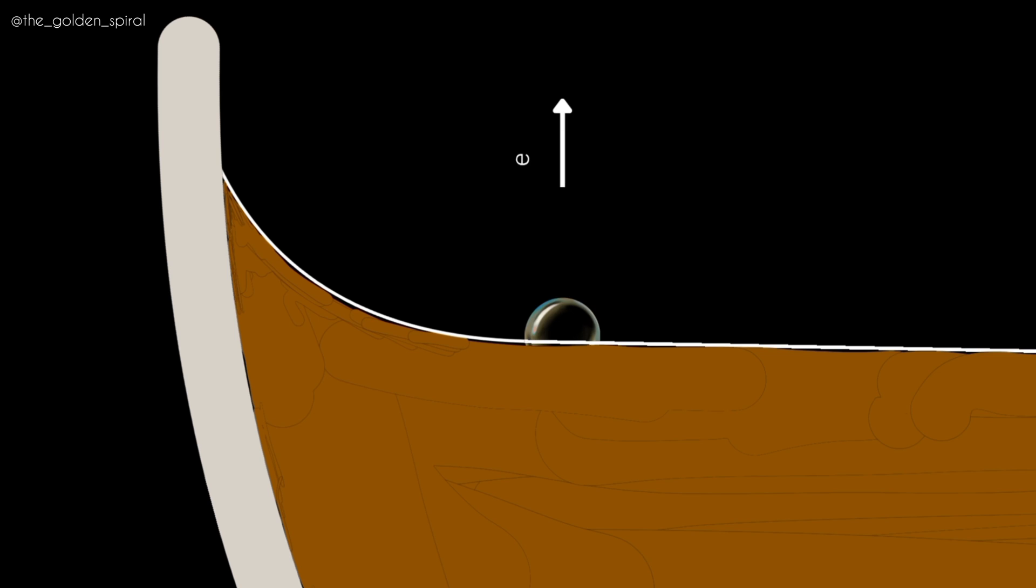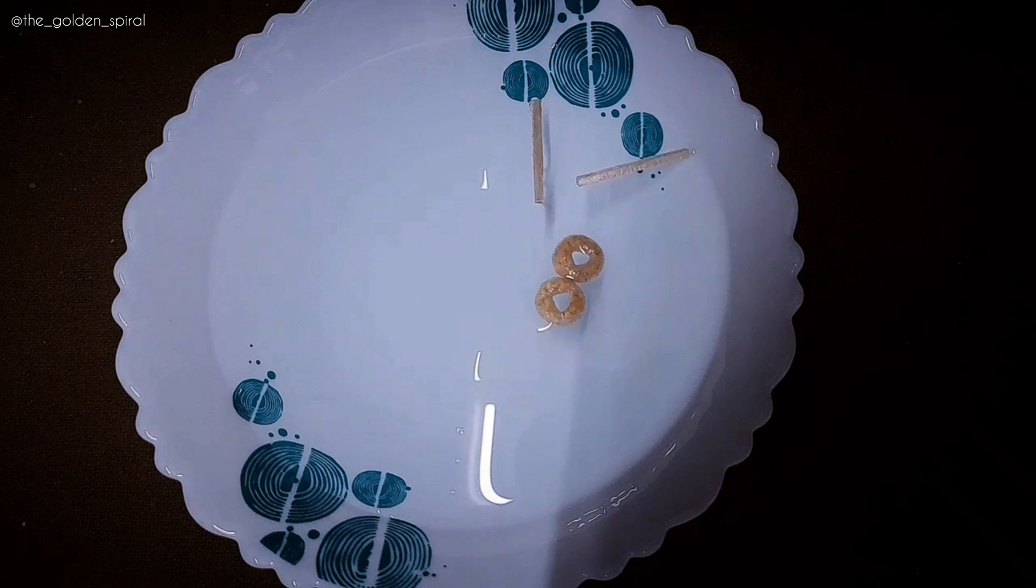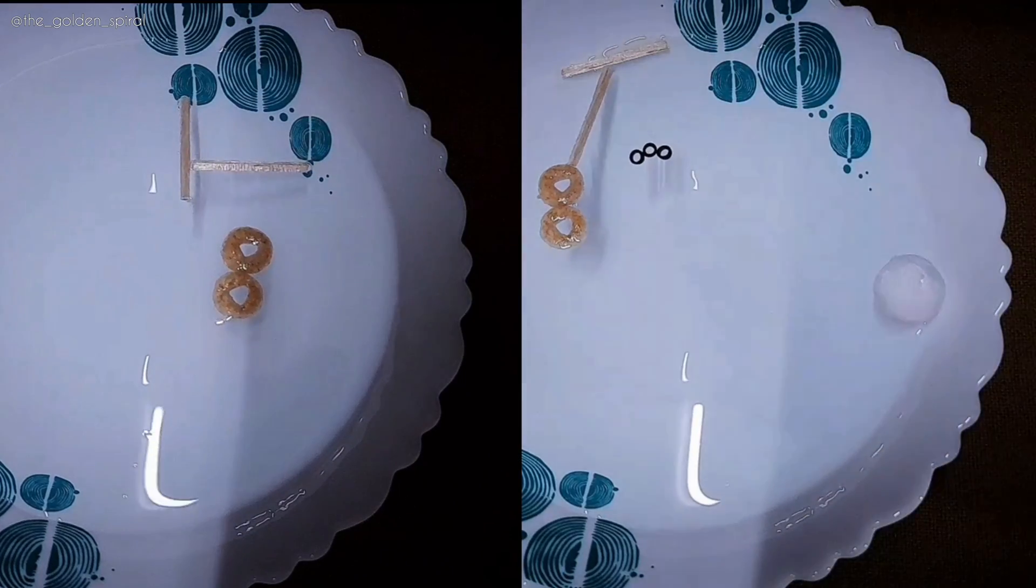Because it is constrained to lie at the interface, it cannot simply rise vertically upward. And instead does the next best thing by moving upward along the meniscus. And bubbles get collected near the edge. That's the same reason for these sticks and Thermacol balls stuck to the bowl.